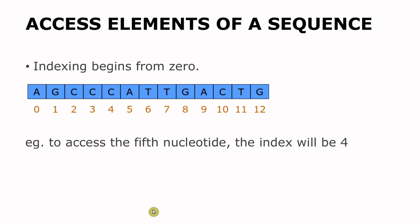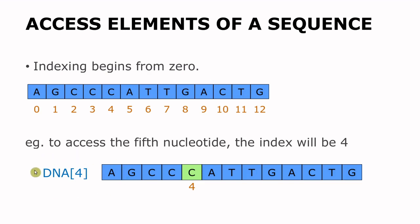So for example, if we want to get access to the fifth nucleotide, then the index will be four. Therefore this will be the code that we'll use to access it, and it's going to return to us the nucleotide C, because that is number five: one, two, three, four, five. Let me show you how it's done on the terminal.